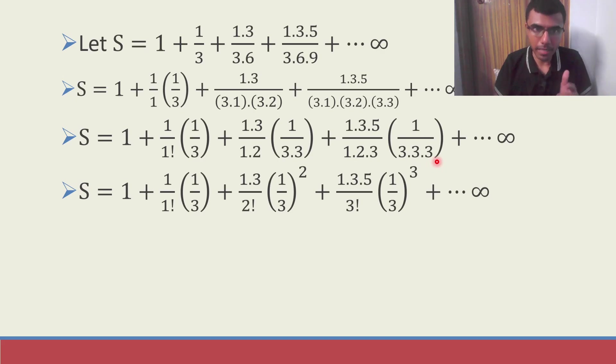Now observe the pattern. Here I have a 1, here I have a single term in the numerator and a factorial here. Here I have 2 terms in the numerator and I have 2 factorial and the power is also 2. Here I have 3 terms in the numerator, I have 3 factorial in the denominator and the power is 3. So you see, the pattern is really good. This one, I can directly compare it with what I want.